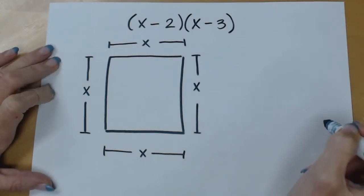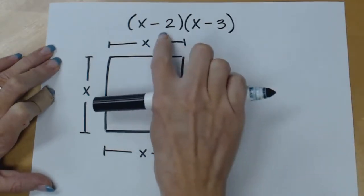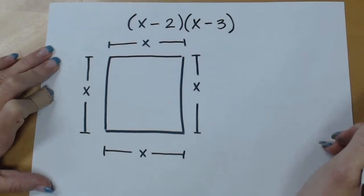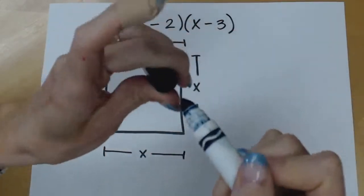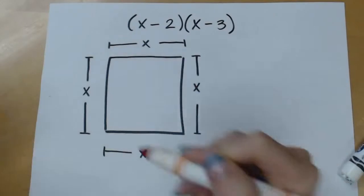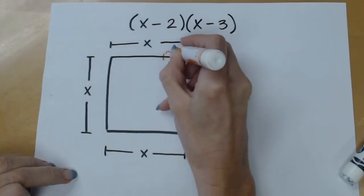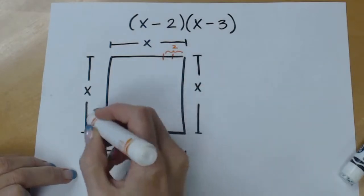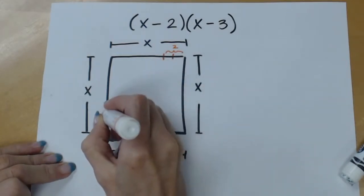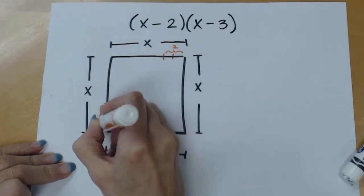Now out of this we need to somehow construct an area that will be equivalent to x minus 2 and x minus 3. So to do that we are going to subtract 2 away from one side and then 3 away from another side.